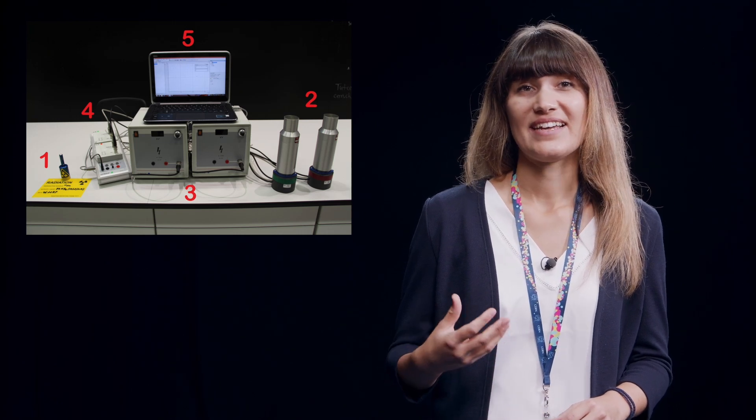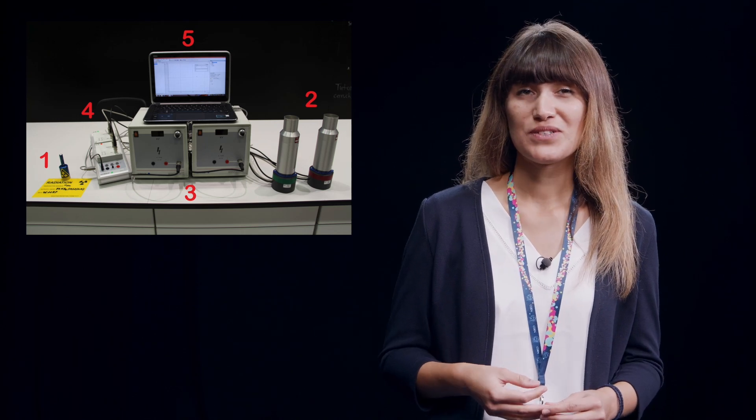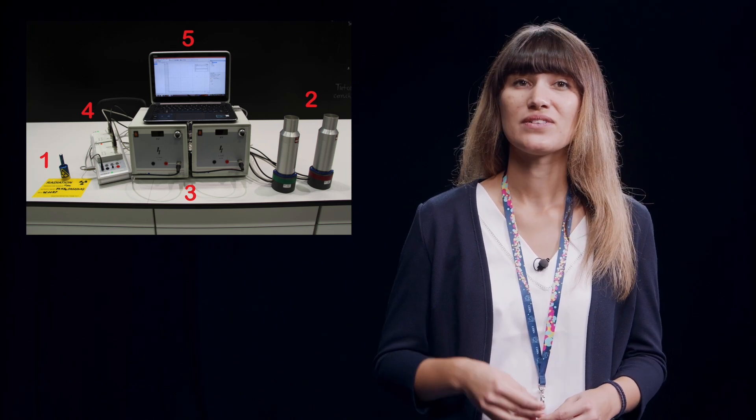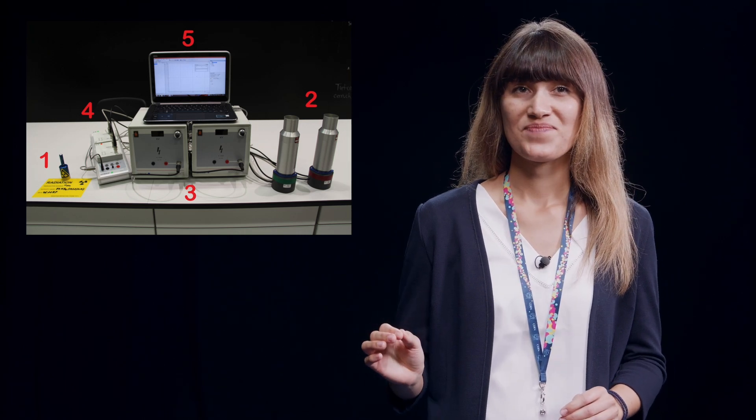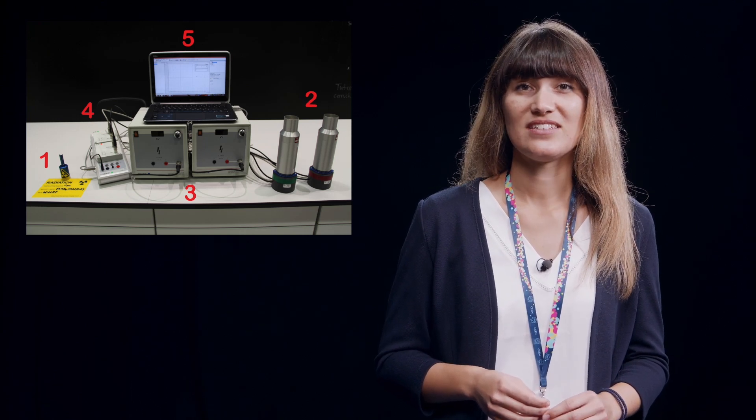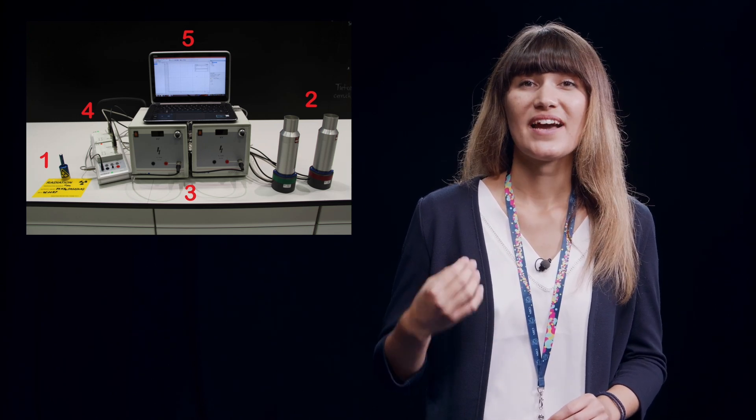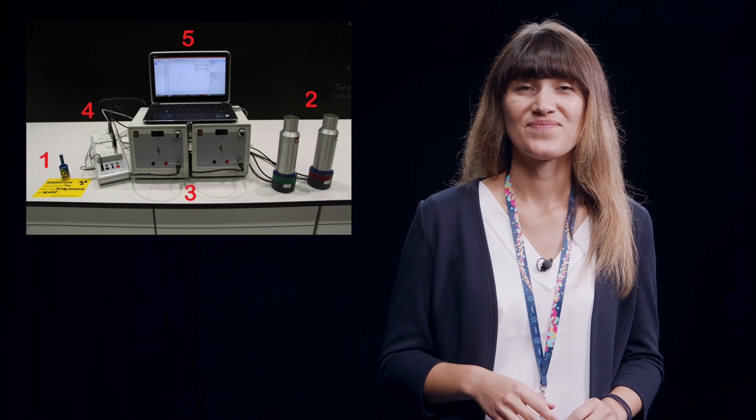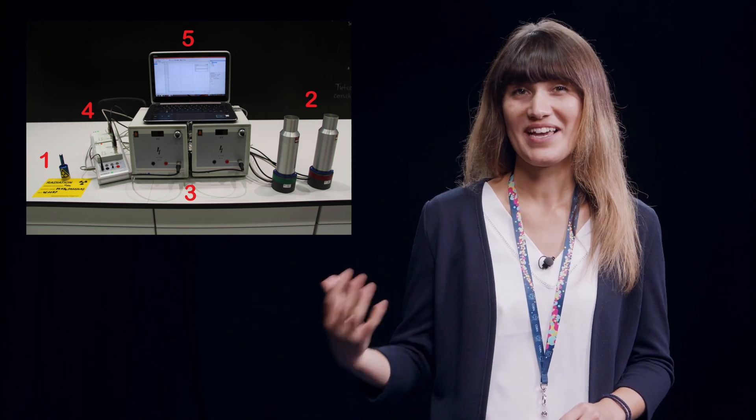If a high energetic photon moves through a scintillator, visible light will be produced. This signal of visible light will be amplified inside a photomultiplier and converted into an electrical signal. The size of this electrical signal is proportional to the energy of the initial high energetic photon. A photon with higher energy will lead to a higher electrical signal, while a photon with smaller energy will lead to a smaller electrical signal.